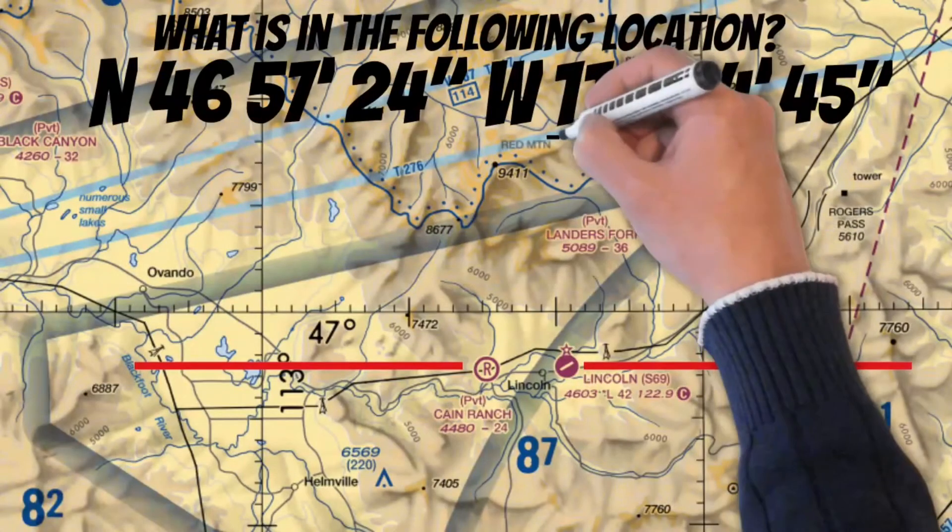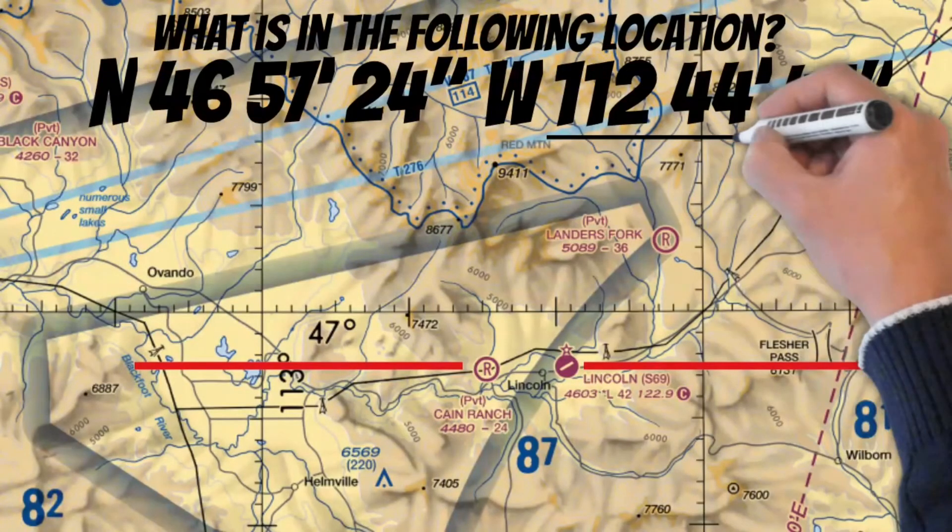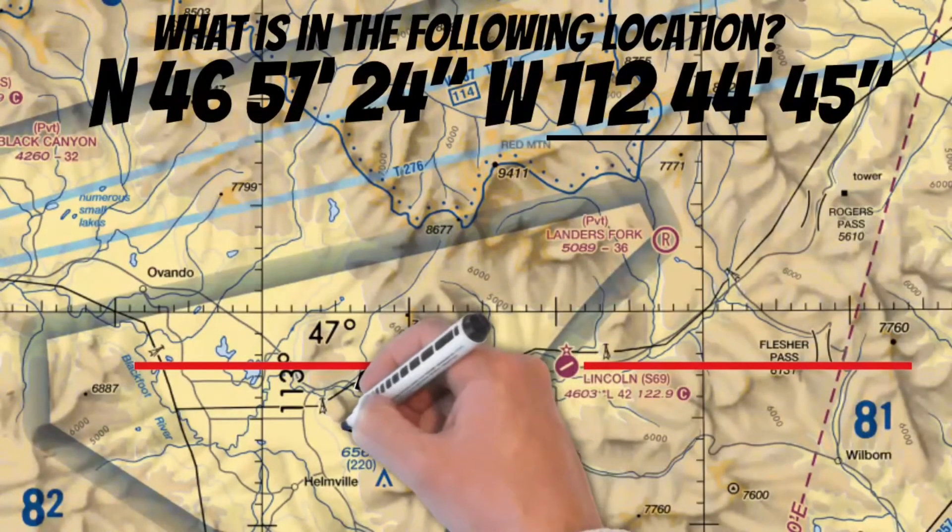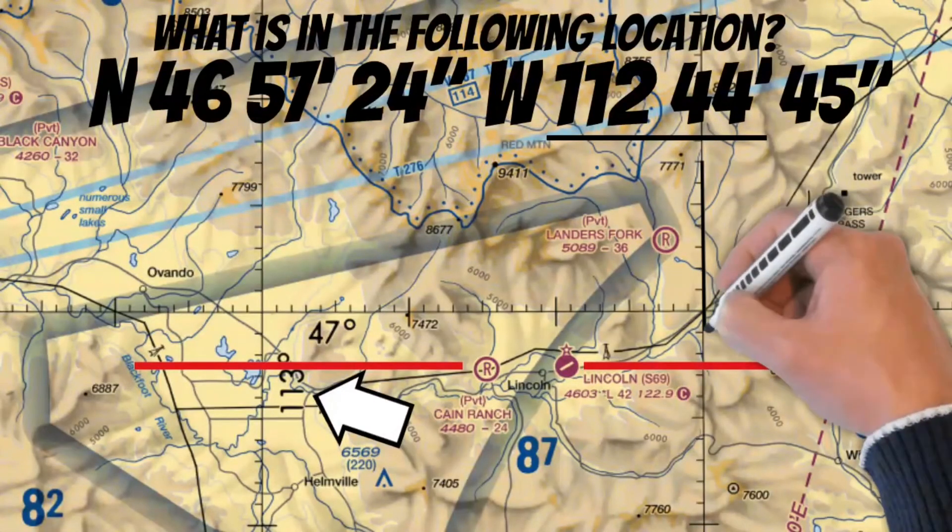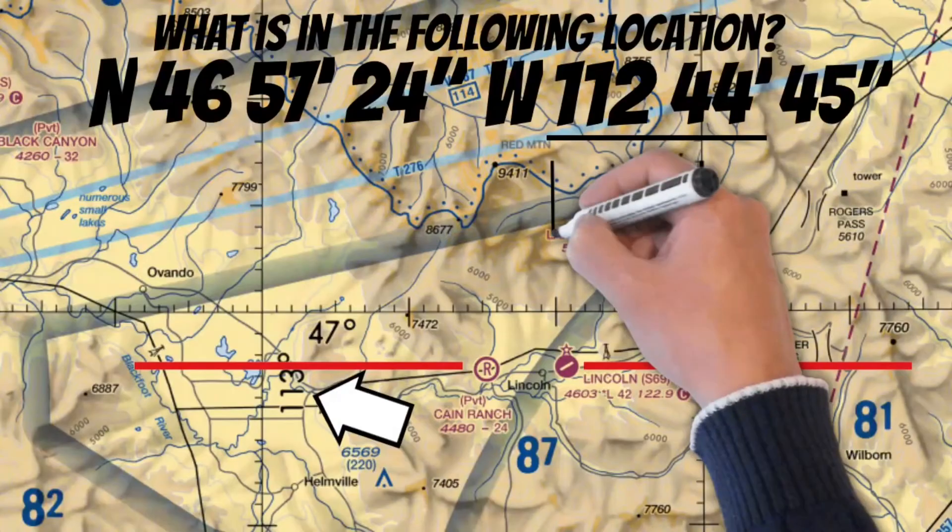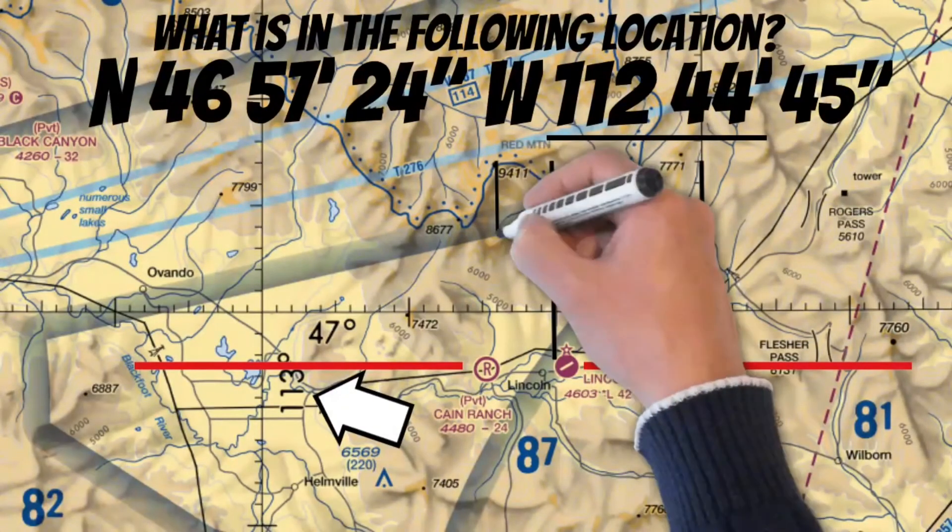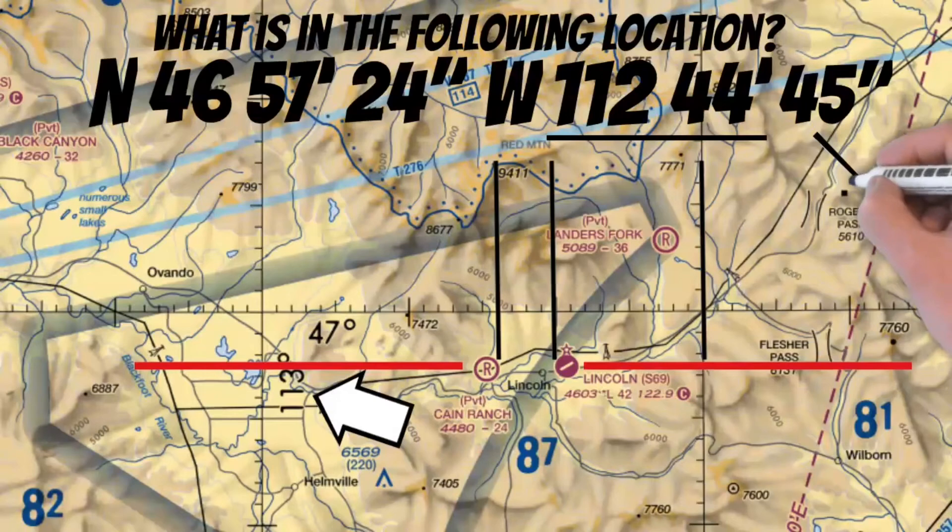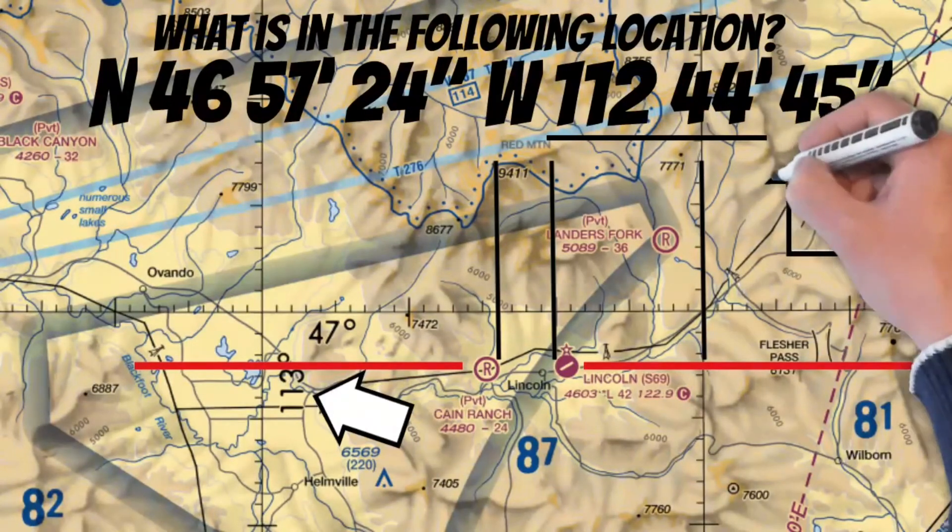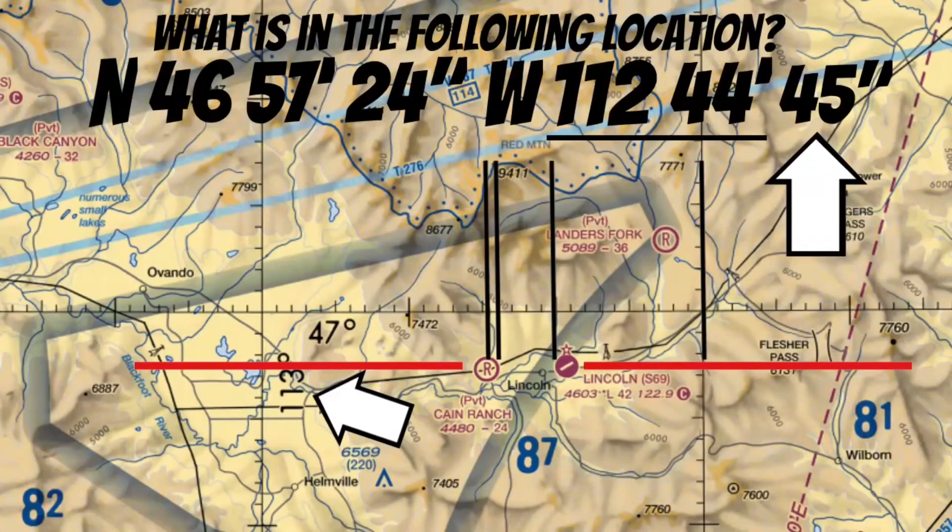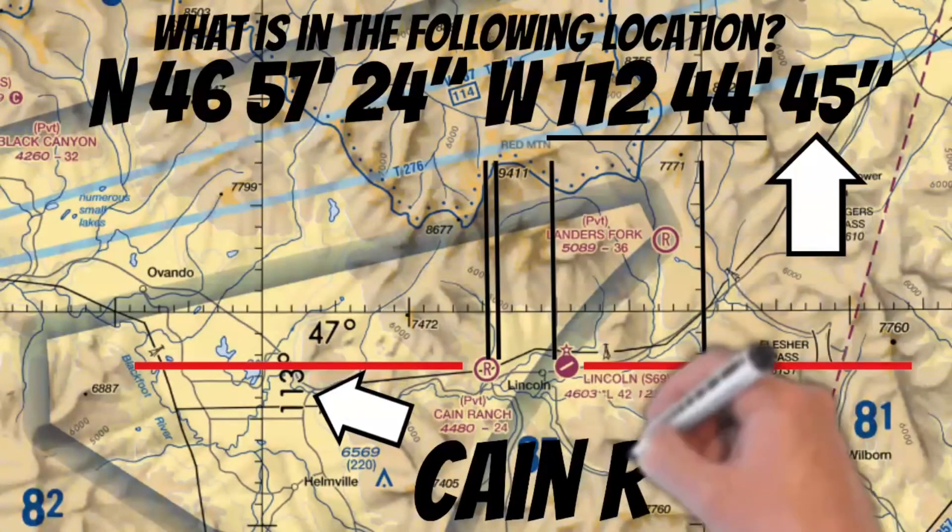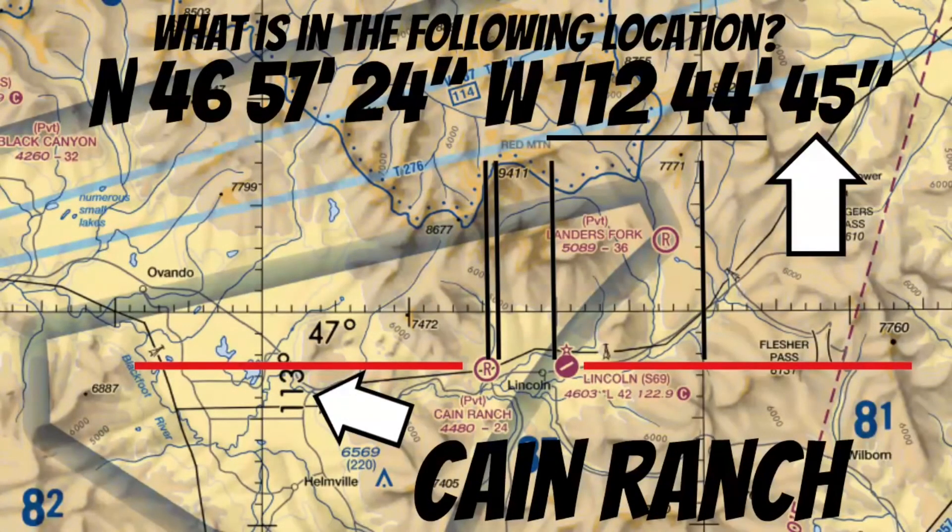Our longitude is showing 112 degrees in 44 minutes so we know we're east of this mark. Here's 112 in 30 minutes. Here's 112 in 40 minutes. Then this one is 112 in 44 minutes. Now we'll take a quick look at our seconds here. We've got 45 seconds which means 45 sixtieths of a nautical mile. And that's .75 nautical miles. So now that we triangulated our position it looks to me like Kane Ranch Airport is the answer to this question.